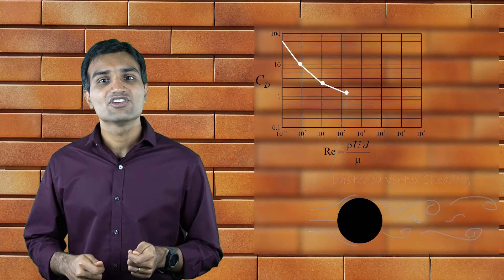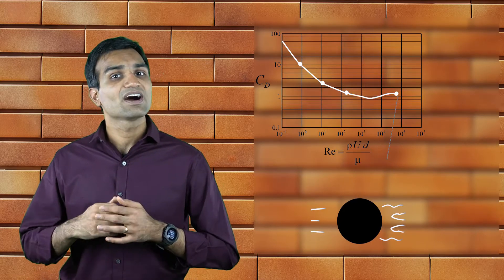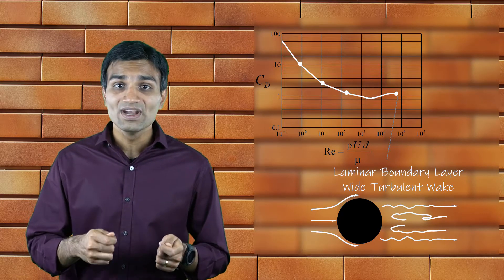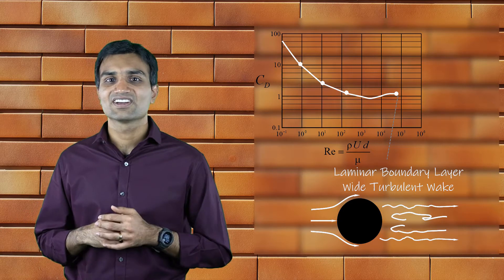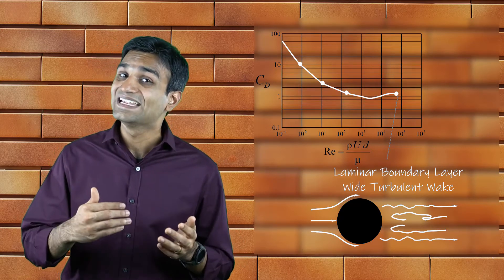The drag coefficient curve is relatively flat in the 10 to the power 3 to 10 to the power 5 range. In this range, the fluid experiences an adverse pressure gradient towards the rear end of the cylinder and the flow separates completely.